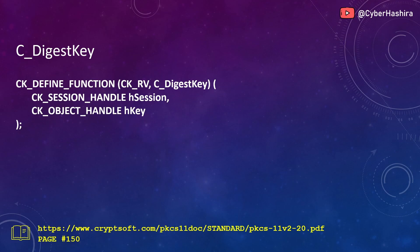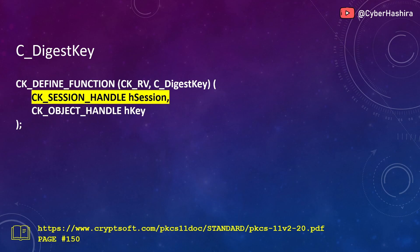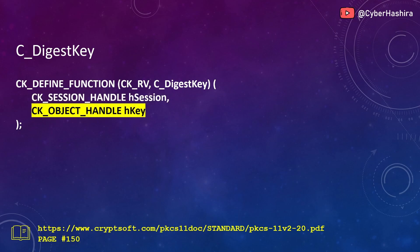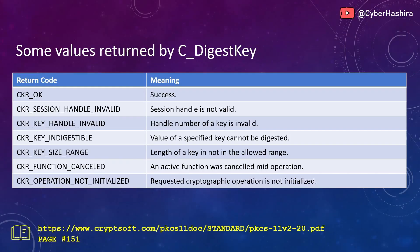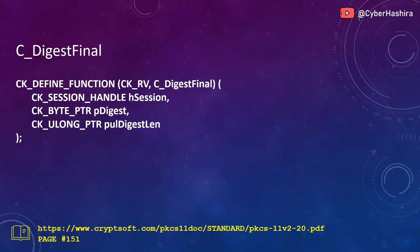The next function I want to talk about is C_DigestKey. This function is used for calculating the hash value of a cryptographic key. This function takes two arguments. The first argument is a session handle, and the second argument is the object handle of the key whose value you want to digest. Here's a list of return codes that C_DigestKey is expected to return. You can read about this function on page 151.